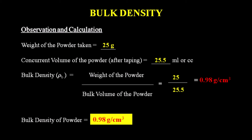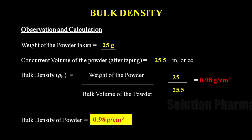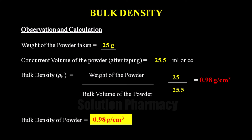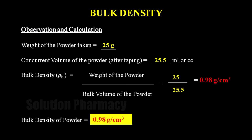Now for the calculation of bulk density: the weight of powder taken is 25 grams. The concurrent volume after 125 tappings and then 50 tappings — both giving the same reading — is the final bulk volume, which equals 25.5 ml. The formula is: bulk density = weight of powder ÷ bulk volume of powder. Substituting the values — 25 grams divided by 25.5 ml — after calculation we obtain 0.98 g/cm³. So the bulk density of the sample powder is 0.98 g/cm³.